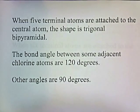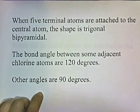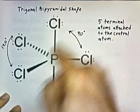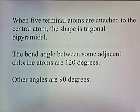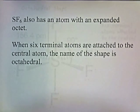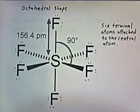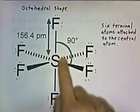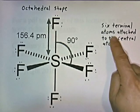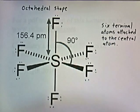When five terminal atoms are attached to the central atom, the shape is trigonal bipyramidal. Bond angles between some adjacent atoms are 120 degrees, and other angles are 90 degrees. SF₆ has an atom with an expanded octet. When six terminal atoms are attached to the central atom, the name of the shape is octahedral. You have the central atom with four atoms attached to it on the same plane, and then one above and one below. Any time you have six terminal atoms attached to the central atom, you'll have an octahedral shape.